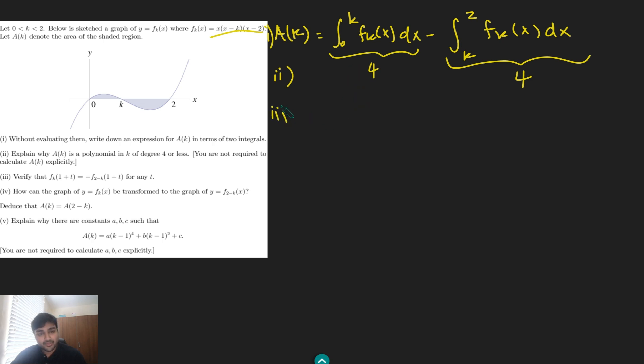Let's look at part three. We want to verify that fk(1+t) equals minus f(2-k)(1-t) for all t. When a question says verify, that basically just means, you know, plug it in, show that, work out what the left hand side is, work out what the right hand side is and show that they're equal. There's a couple of ways you can do this, some more efficient than others. What you could do is expand out fk(x) and then sub in 1+t and get a monstrous lots of expanding and simplifying and collecting like terms. You don't want to do that. In fact, here you can do it quite nicely, just keeping it factored.